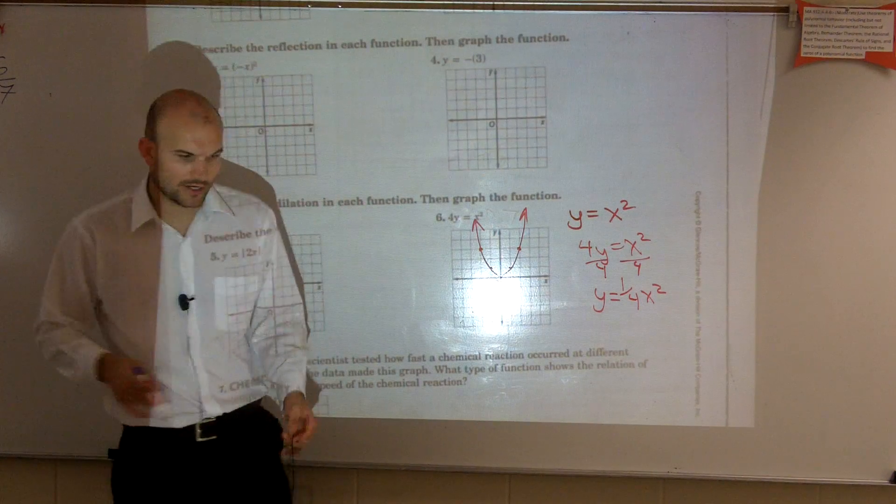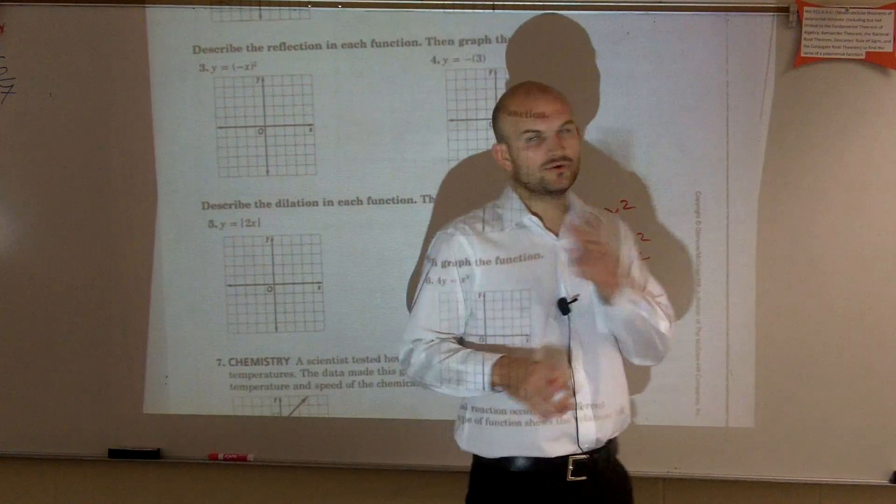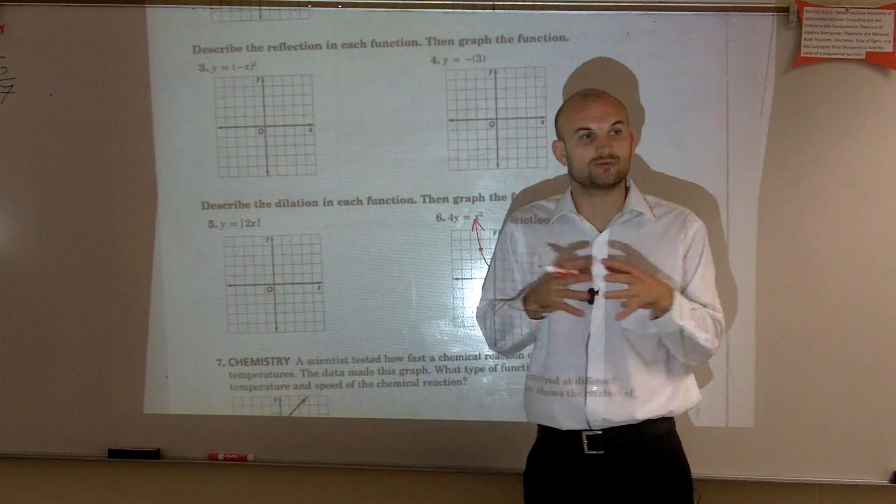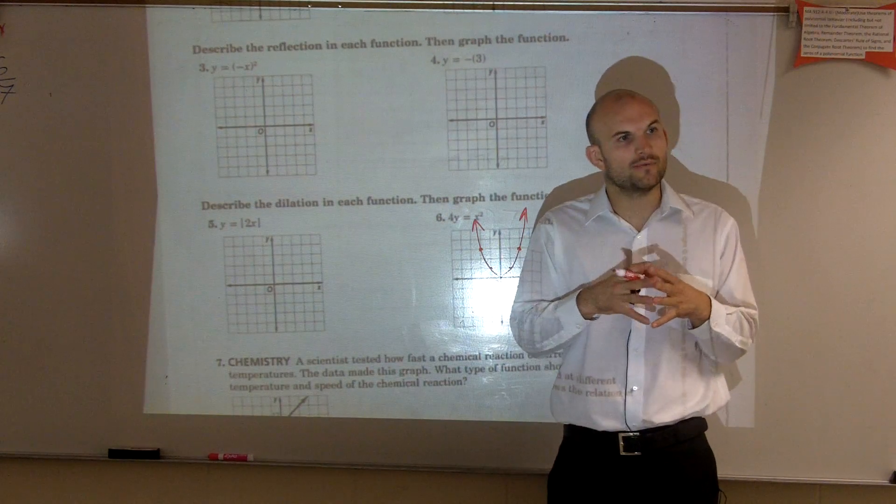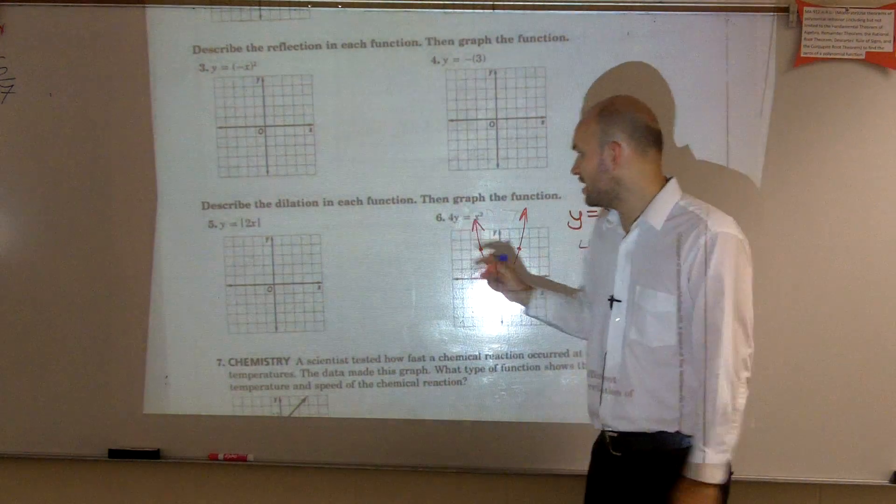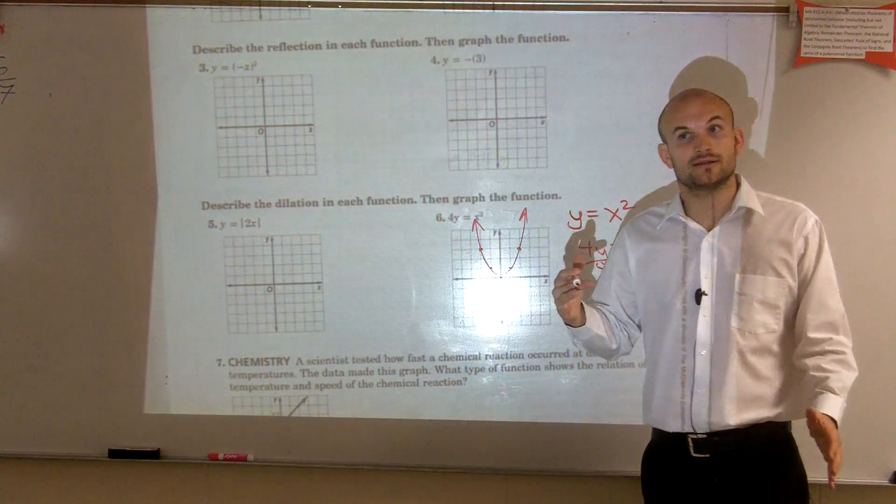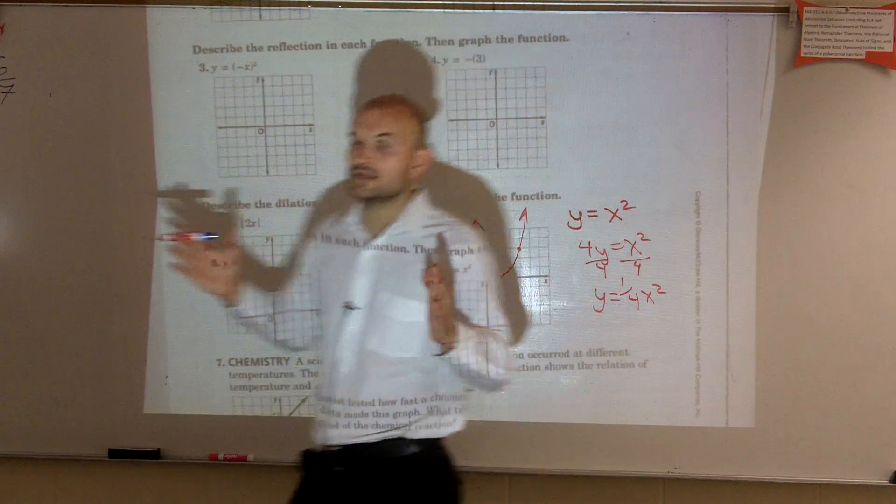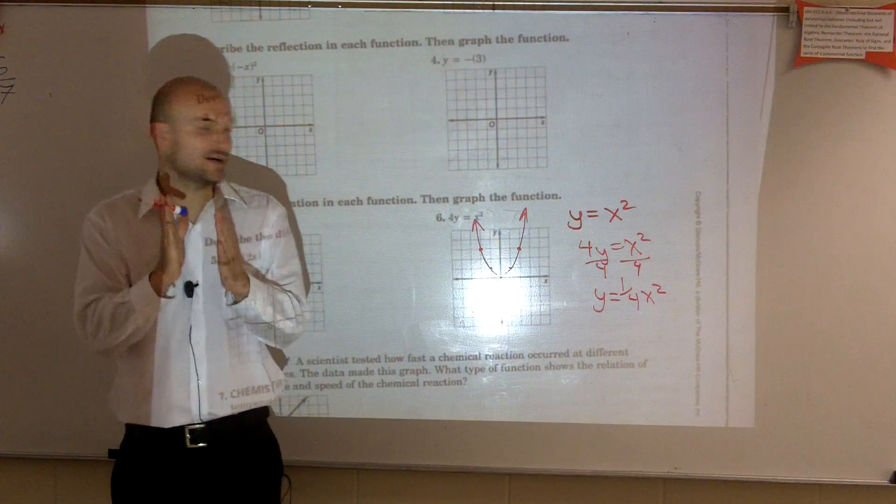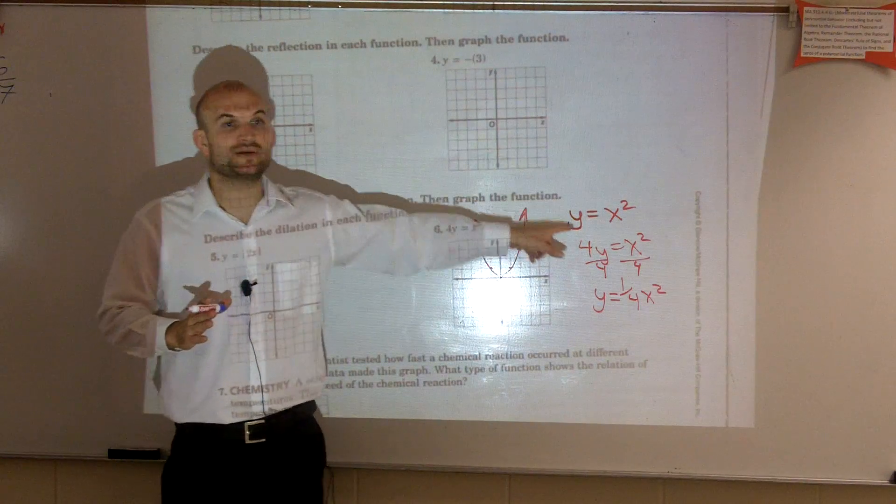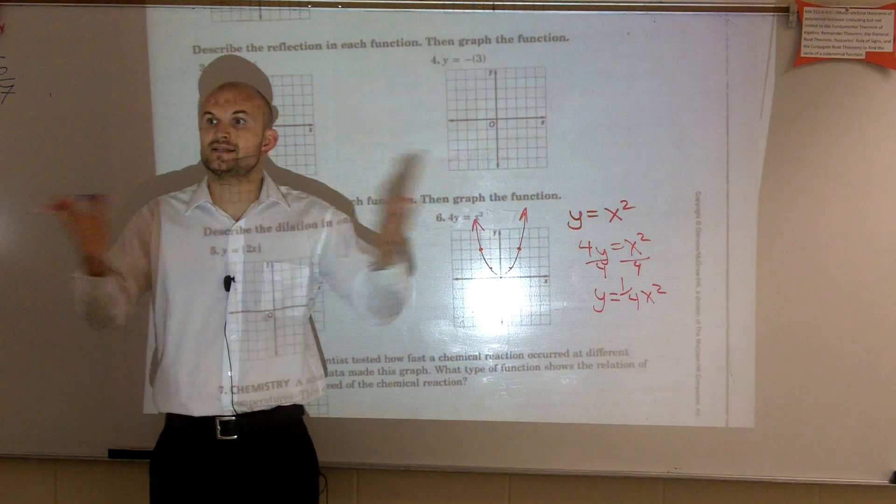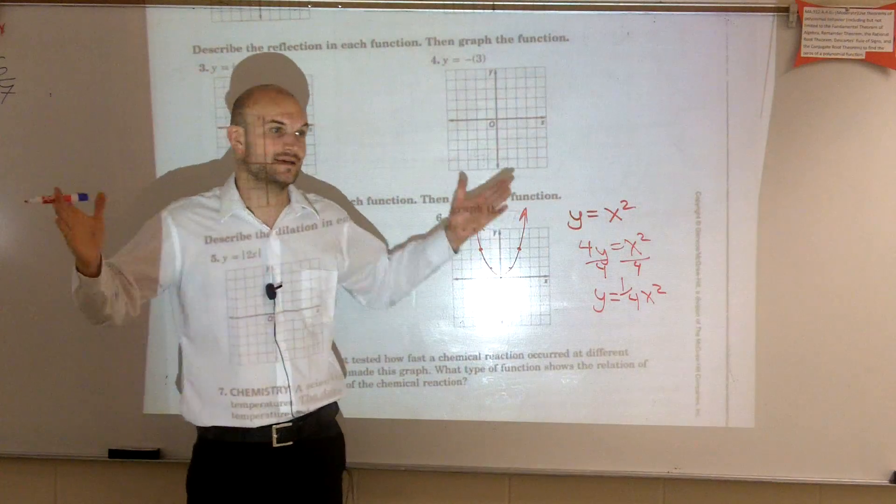So then what we do is we look at our notes and we say, all right, there's two cases when we had a number that was multiplied by our function. If the number was greater than 1, it compressed it, made it skinnier, and when it was between 0 and 1, it expanded it horizontally.